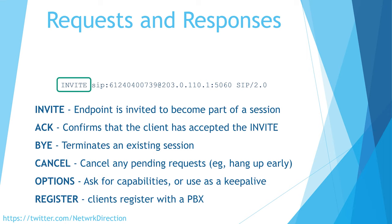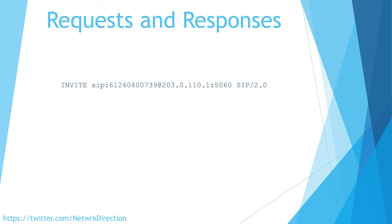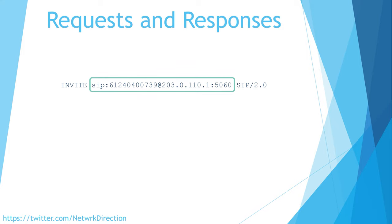For example we can use the OPTIONS command to ask an endpoint what its capabilities are, or we could use it as a keep-alive message to see if a device is up. After the command is the SIP address — it starts with the word SIP. In this case we have a phone number, the IP address of the destination and the port we're using. However it won't always look like this; a SIP address could also be an email address rather than a phone number and IP. And finally the last part shows us the version of SIP that we're using — version 2 in this case.